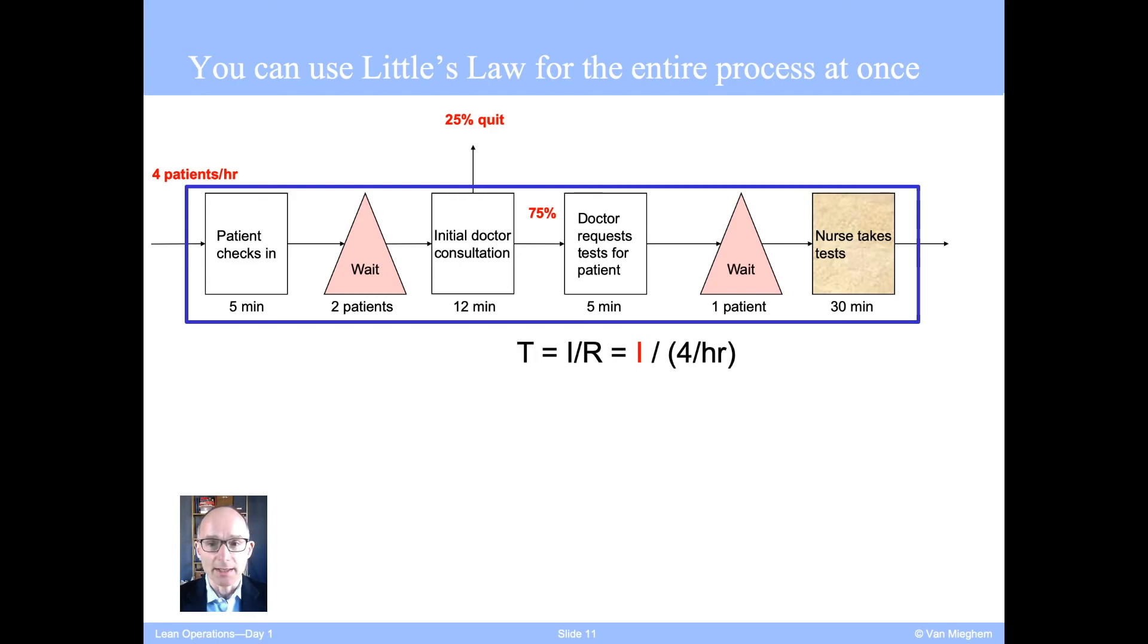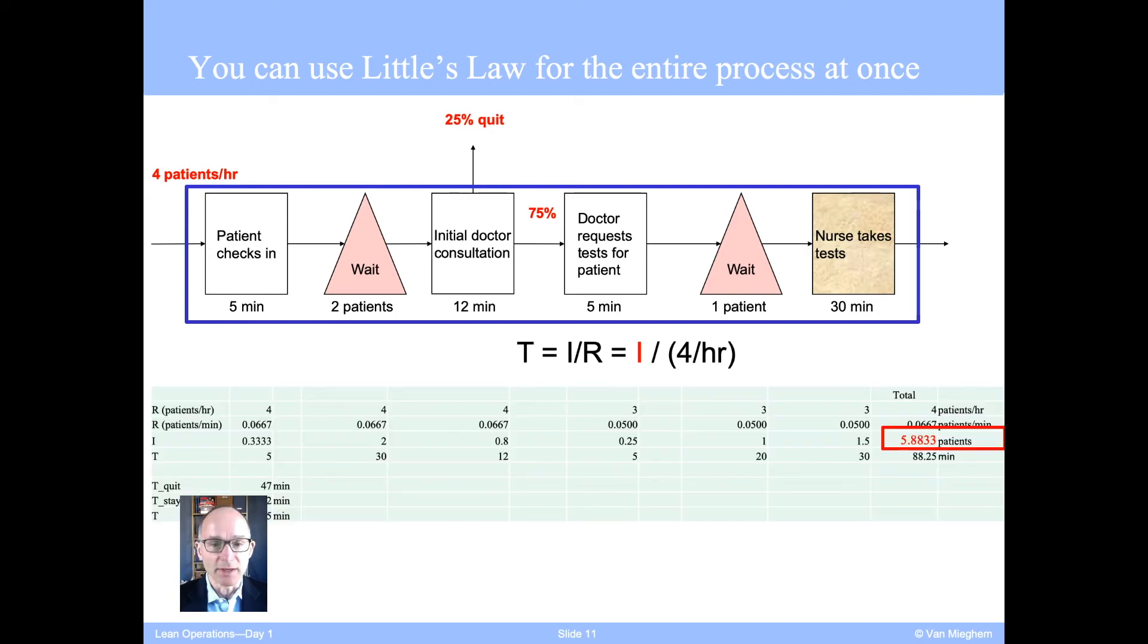Okay, after you've done this, the way I did this is I just put it into Excel. At every step, I compute a throughput. At every step, I also know either the flow time or the inventory. And I can use Little's Law to get a third variable. I sum all these inventories at all of the steps and I find that the average inventory in steady state is 5.8833 patients.